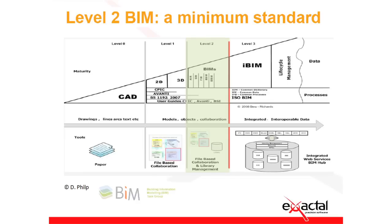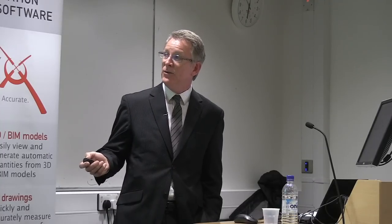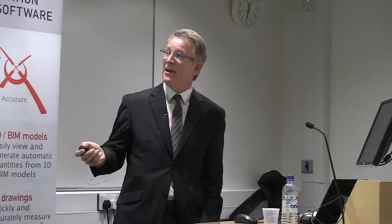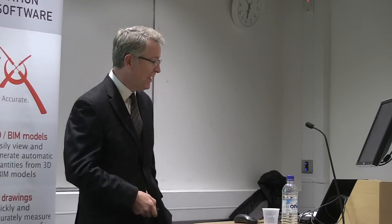We're all aware of the Cabinet Office mandate for BIM adoption by 2016. The Bew Richards chart talks about level 2 maturity — developing from CAD 2D and 3D drafting through BIM, ultimately to iBIM. They're looking for level 2. The definition is: managed 3D environment using separate discipline BIM tools — basically moving from CAD drafting into active BIM modelling in a shared environment.